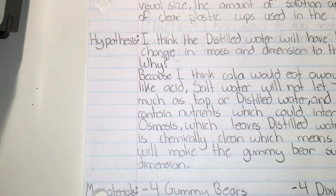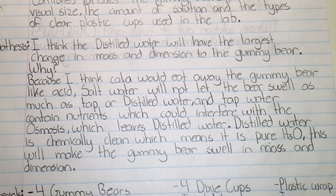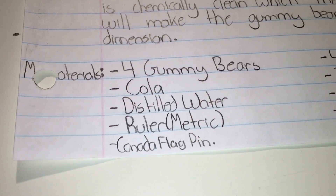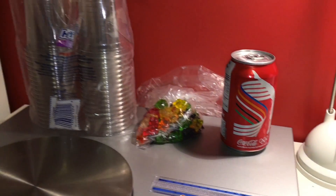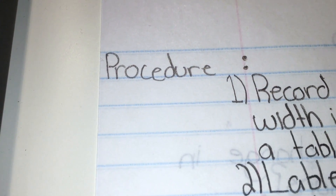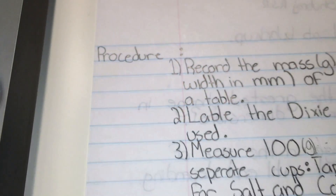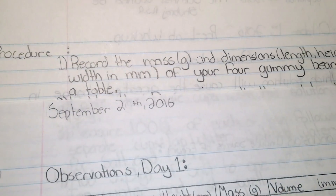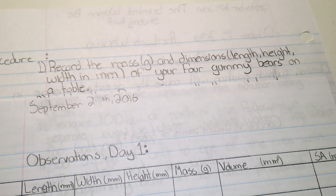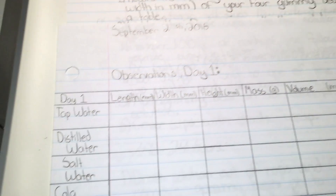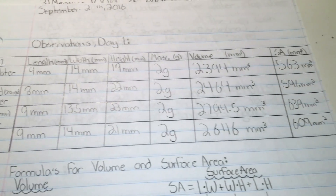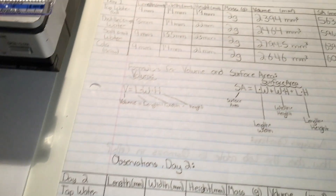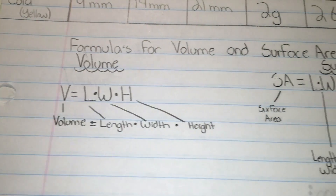Here I now have my hypothesis. Here are the materials that will be used in the lab. Here we have a procedure from steps 1 to 6 for today and steps 1 to 2 for tomorrow. And if you did not know how to find the volume and surface area, I have provided formulas here — you can take a look at these.